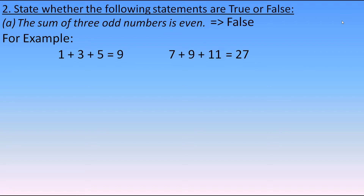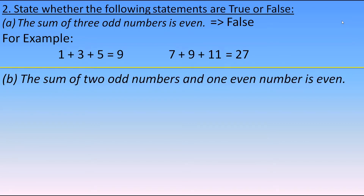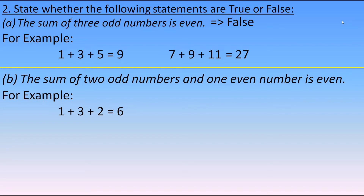Now let's check the second statement: the sum of two odd numbers and one even number is even. Taking odd numbers 1 and 3 and even number 2 — their sum is 6, which is even. Another example: 7 and 9 as odd and 4 as even — their sum is 20, which is also even. So this statement is true.